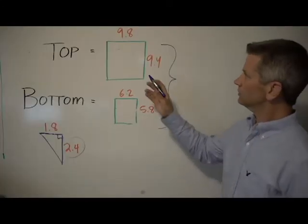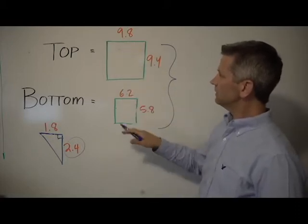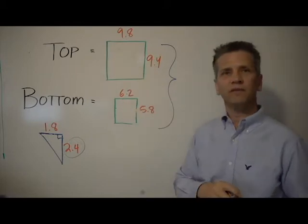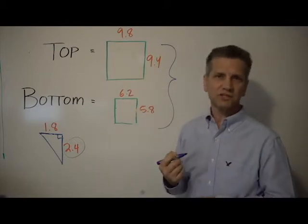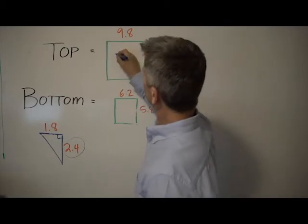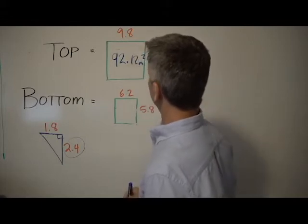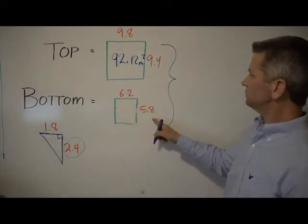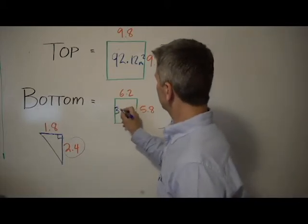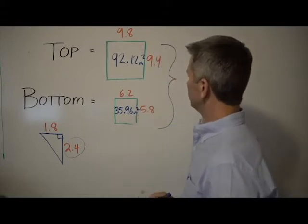Now all we have to do is figure out the square meters, the size of our upper excavation, the size of our lower excavation, and then we'll add those together and we'll get the average of both of those numbers, which is actually pretty easy. So 9.8 times 9.4 is 92.12 square meters, and 6.2 times 5.8 is 35.96 square meters.